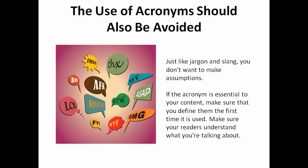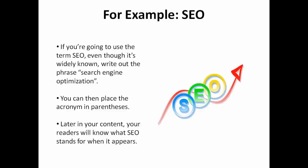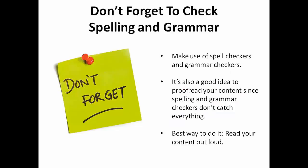Along with jargon, acronyms should also be avoided. You don't want to make assumptions. If an acronym is essential to your content, make sure that you define it the first time it's used. For example, if you're going to use the term SEO, actually write out the full phrase 'search engine optimization.' You can then place the acronym in parentheses, so readers will know what SEO stands for when it appears later.